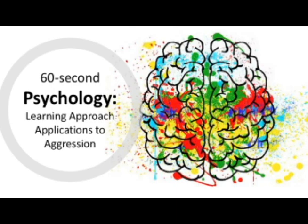However, this is one of the main weaknesses of the learning approach when it comes to aggression. There are plenty of examples of people who continue to repeatedly act aggressively despite receiving punishments. This therefore suggests that there must be other factors that influence aggressive behaviour, such as biological factors.